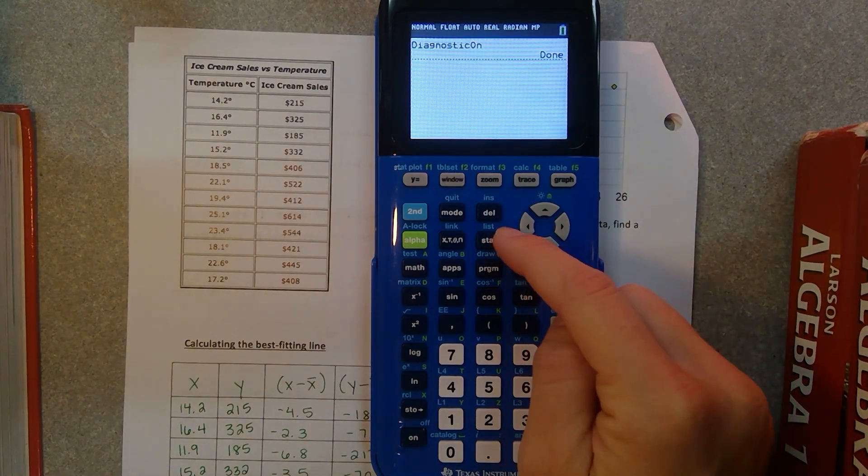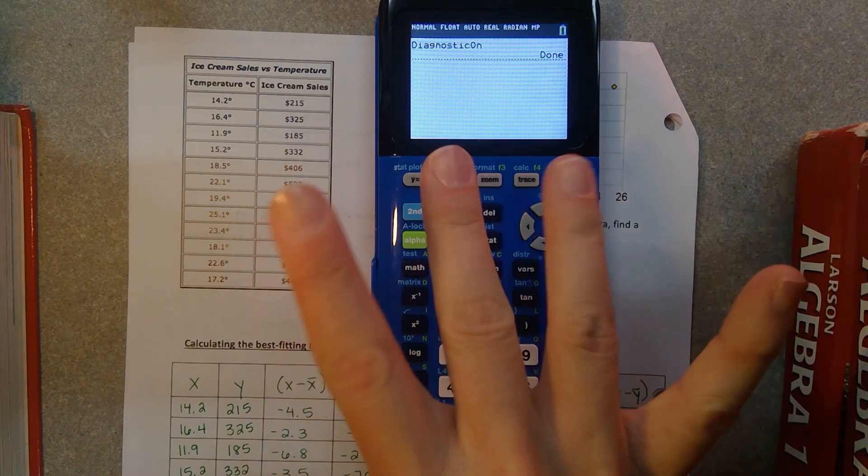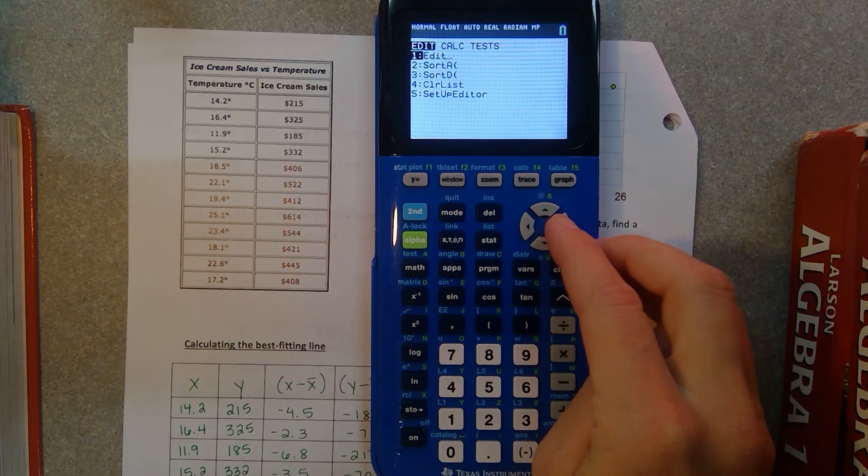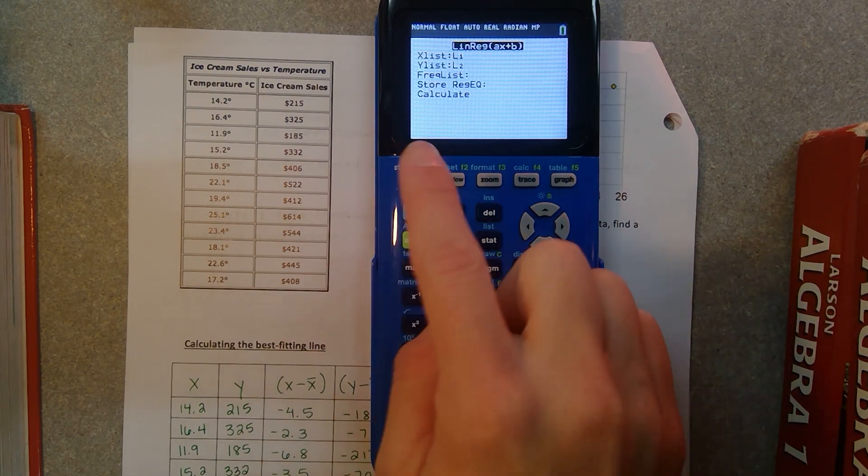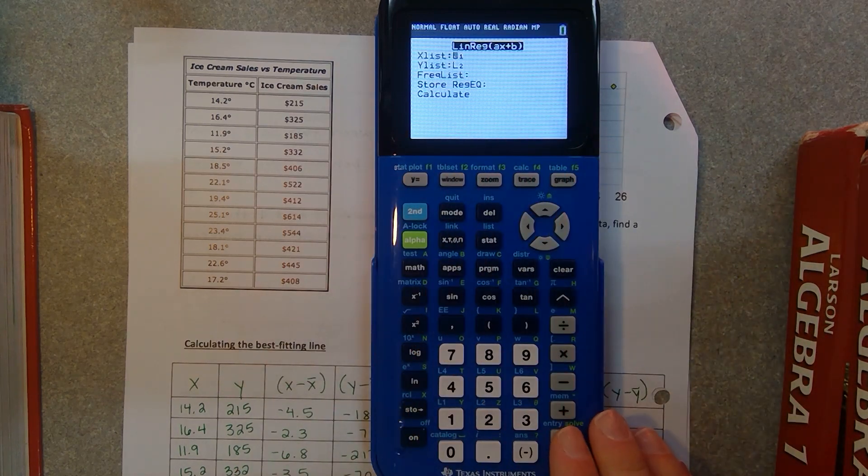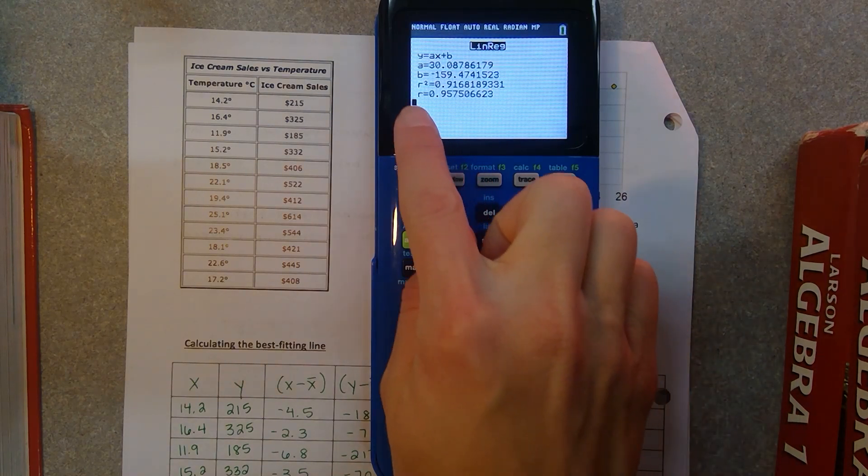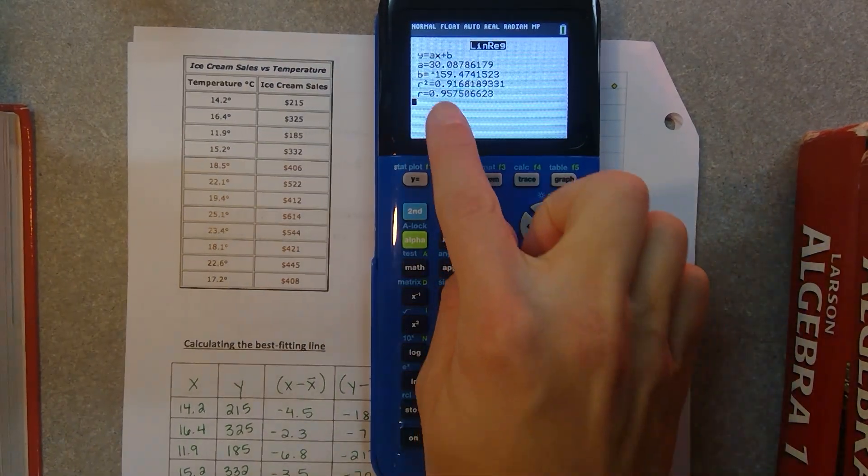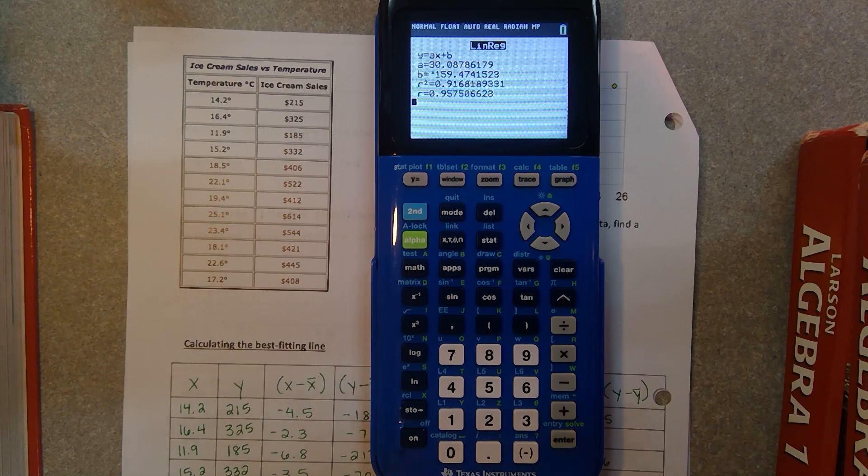But now what you need to do is go back through that process to find the linear regression equation, which is stat, calc, number four. You're going to do that a lot. That's basically the main thing you need to get out of this video. Stat, go over to calc, number four. Stat, calc, number four. Stat, calc, number four. And then go all the way down to calculate again. Hit enter. This time your calculator gives you an R squared and an R value. Don't worry about R squared, that's more statistics. But your R value, 0.957. There it is. Again, in a second we got all this work that we took like two days in class to do.